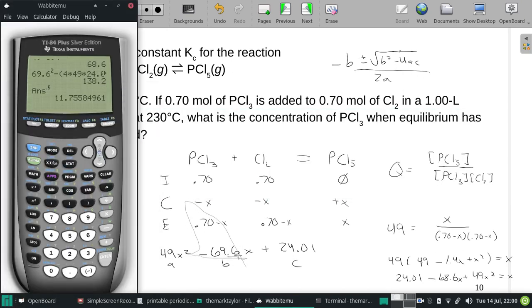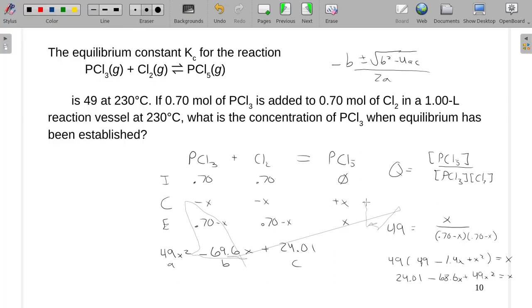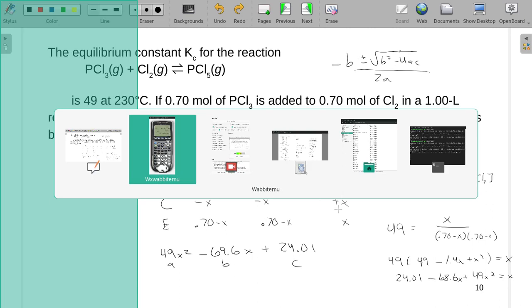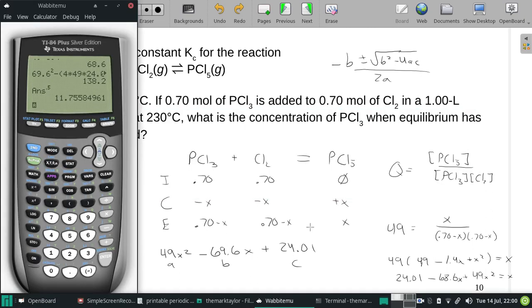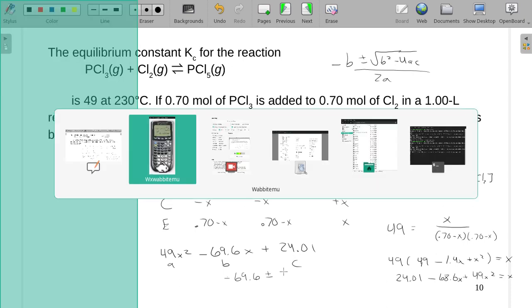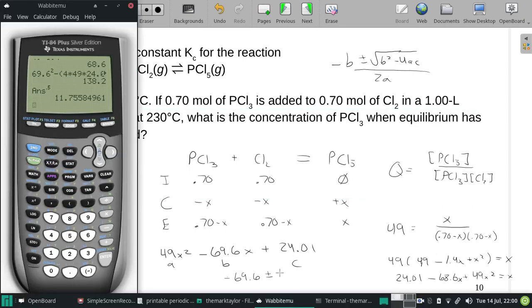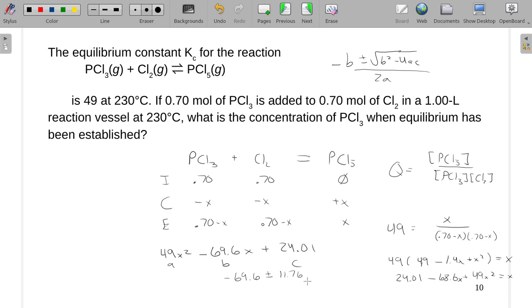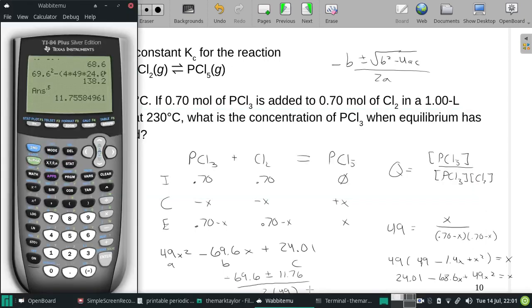So I have, it's 11.76. So I'm going to write it as negative 69.6 plus or minus 11.76 all over 2 times A. So let's try it with positive 11.76 first.